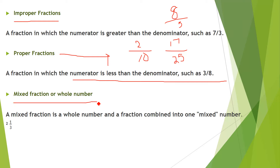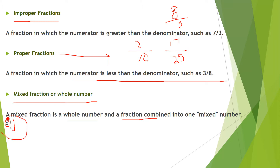Then there is the mixed fraction. A mixed fraction is a whole number and a fraction combined into one. For example, 2 and 1/3: here 2 is the whole number and 1/3 is the fraction part combined into one.